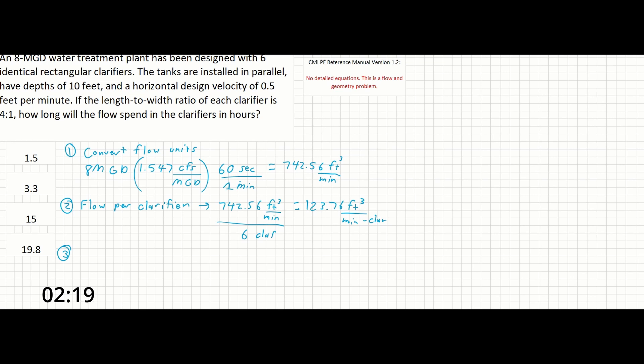For step three, we can now find the area of flow for each clarifier. Let's draw this out so that you can see what it looks like.